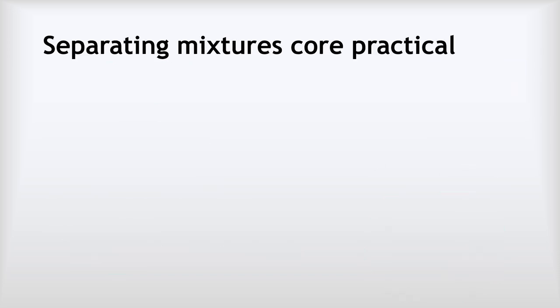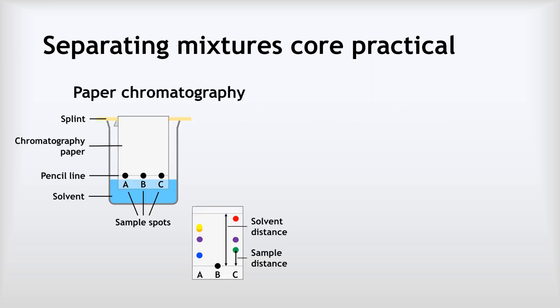This led to the separating mixtures core practical in which we investigated different colored inks. One method we used was paper chromatography. We drew a pencil line on a piece of paper, made our sample spots, and suspended it in some water, making sure the water didn't get above the line of our dots. Then we allowed the water to soak up the paper, separating the ink out into different spots.